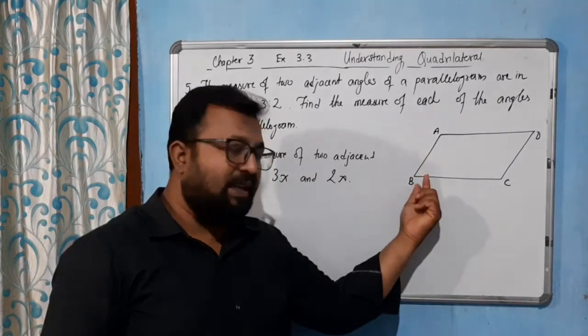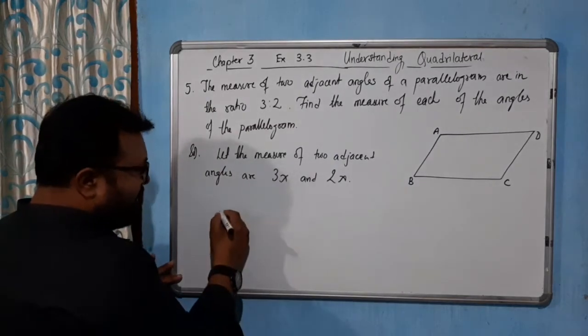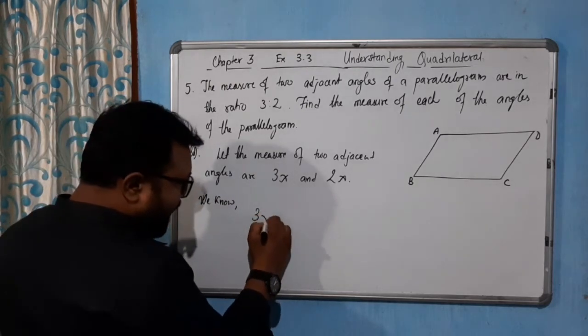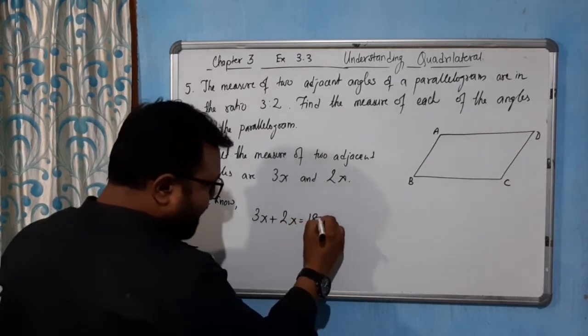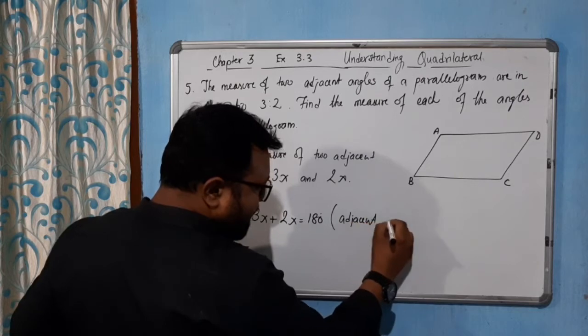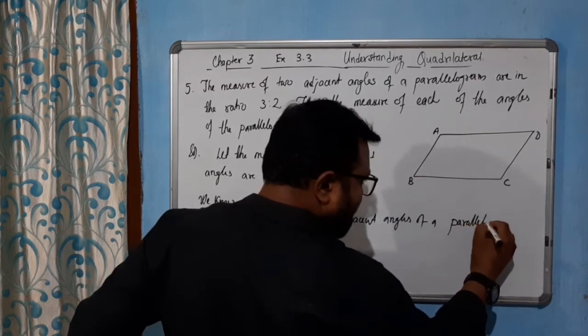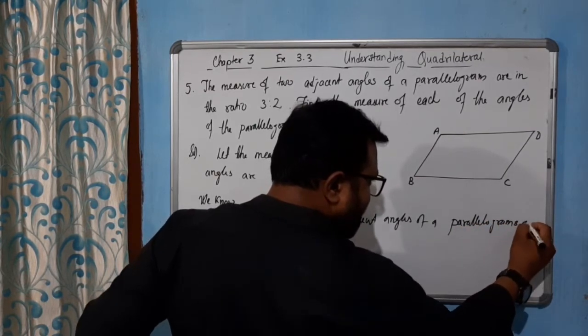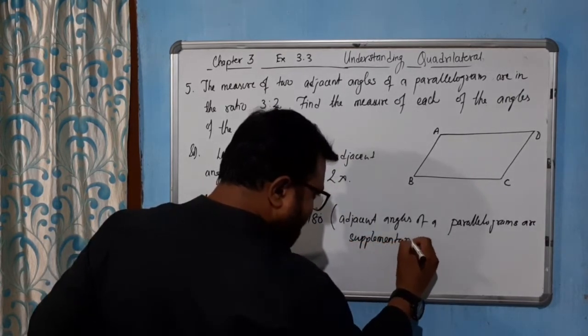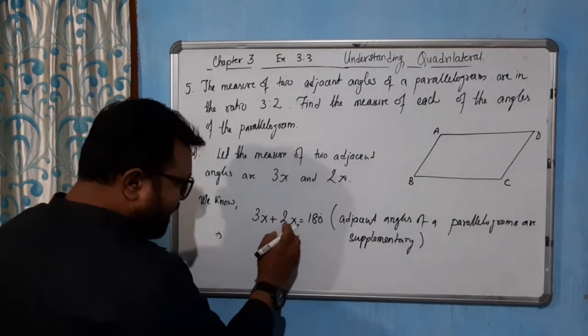So we know that in a parallelogram, adjacent angles are supplementary. We will write: 3x plus 2x equal to 180 degrees. In a parallelogram, they are supplementary, so 5x equal to 180 degrees.